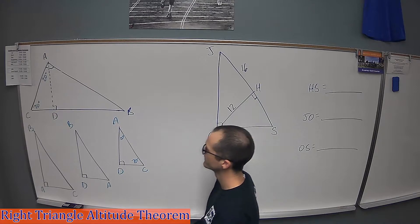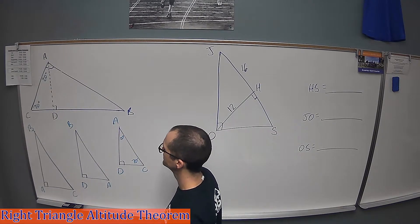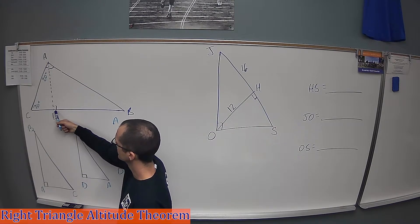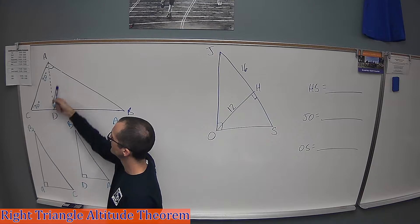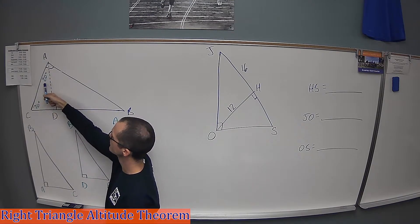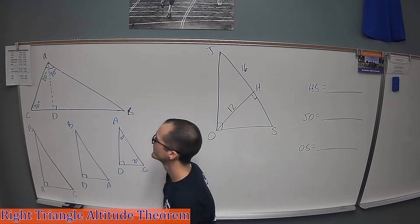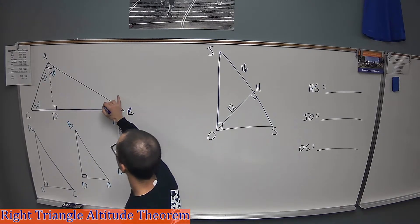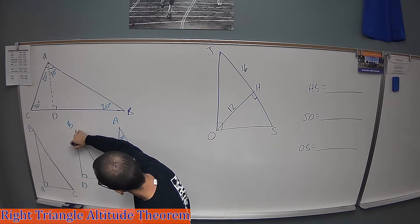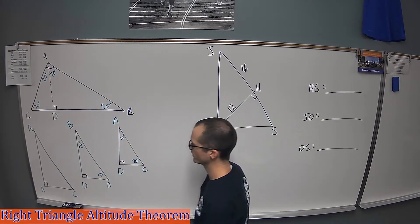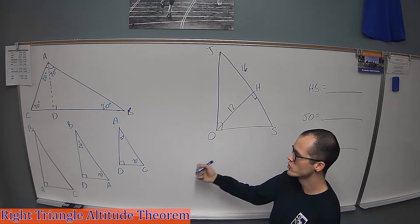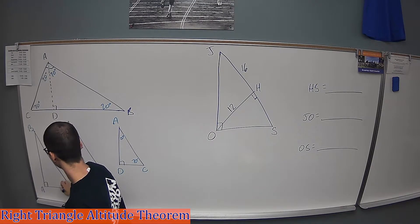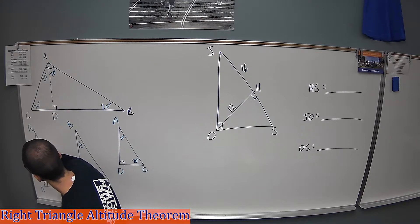Now for the medium-sized triangle: it has a right angle of 90 degrees. Angle DAB — since the entire angle CAB is 90 degrees, if we take away 20 from that, we have 70 left over. Then by the triangle angle sum theorem, 70 plus 90 is 160, subtract from 180, and 20 remains. So the medium triangle has a 20-degree angle and a 70-degree angle, just like the others.